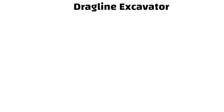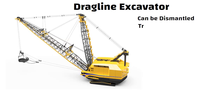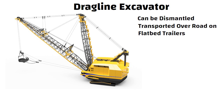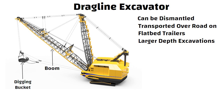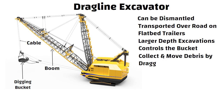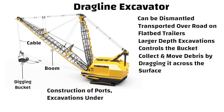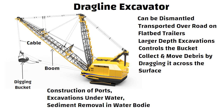Dragline excavator. This type of excavator can be dismantled and transported over the road on flat bed trailers. It is generally used for larger depth excavations. It consists of a long length boom and a digging bucket suspended from the top of the boom using a cable. Once in place, the dragline operator controls the bucket so it can collect and move debris by dragging it across the surface. Construction of ports, excavations under water, and sediment removal in water bodies can be done by a dragline excavator.